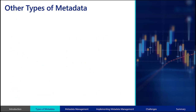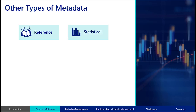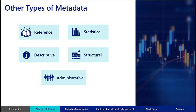In some cases, organizations may also consider categories such as Reference metadata, which provides referential context to the data, or Statistical metadata, which describes methodologies and statistical techniques used in data collection and analysis. Some industries outside of information technology may define different categories of metadata. For example, Library and Information Sciences defines metadata as descriptive, structural, and administrative.